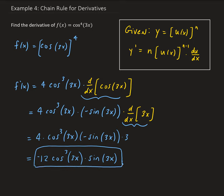To recap: we start with the outside power — in this case 4, bring down the 4, subtract 1, then work with the cosine term and then the 3x part. So we're applying the general power rule more than once here.